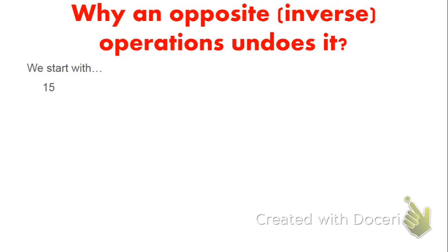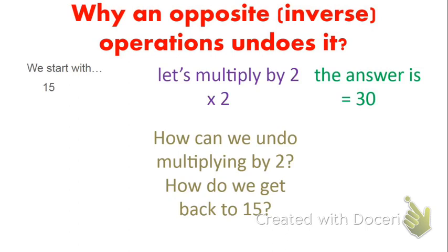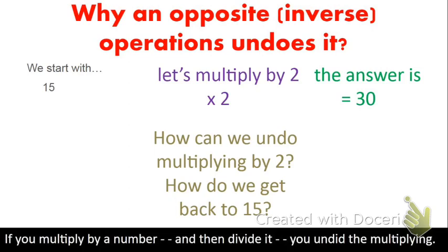First, I want to go through a scenario where we can identify the opposite or inverse operations. If we start off with 15 and multiply it by 2, 15 times 2 is 30. How do I undo multiplying by 2? How do I get back to 15? If you take 30 and divide it by 2, that gives you 15. So if you multiply by a number and then divide by that same number, you've undone the multiplying. Multiplying and dividing undo each other.